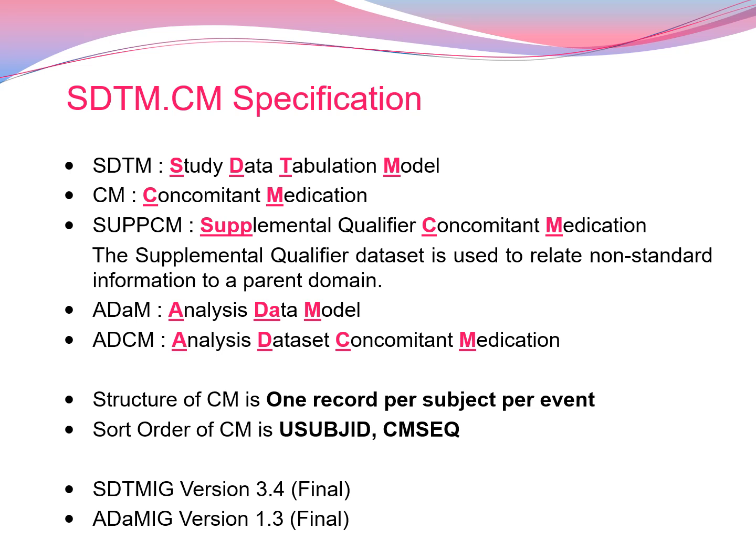The structure of CM is one record per subject per event. If one subject has four or five medications, that patient will have around four to five events. The sort order of CM is the unique subject ID and CM sequence, which is the unique identifying record variable. I am following SDTM IG version 3.4 final and ADaM IG version 1.3 final, which you can download from the CDISC.org website.